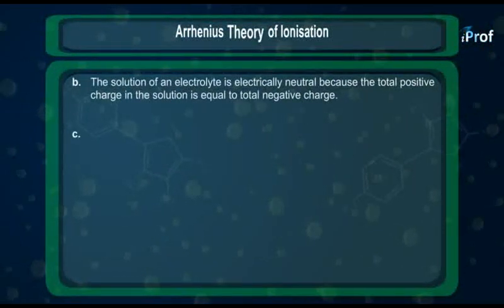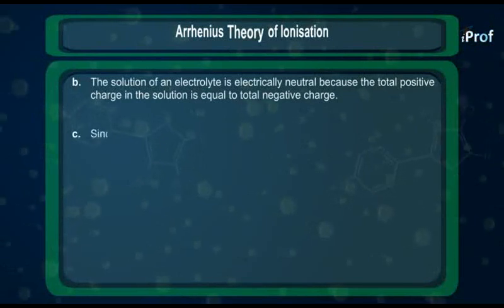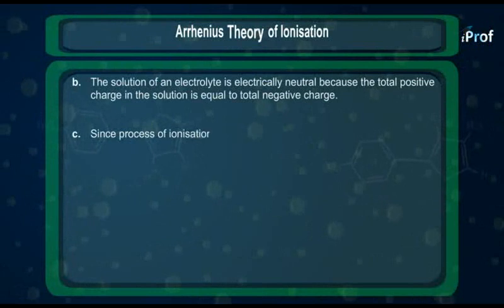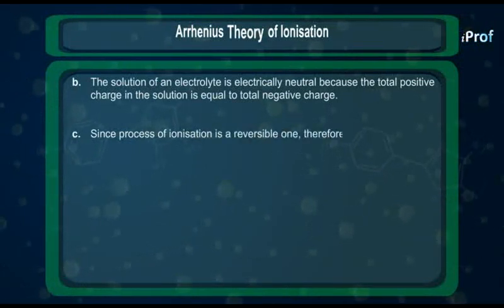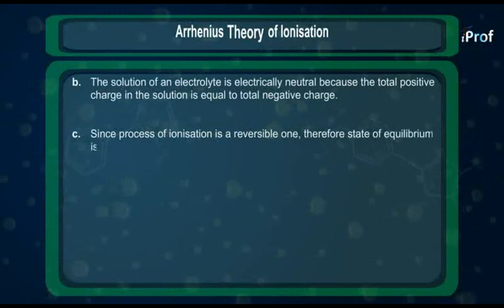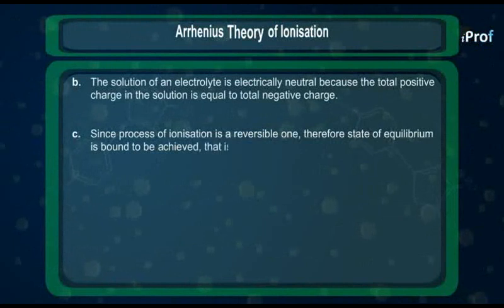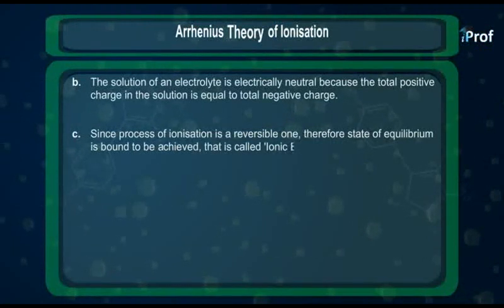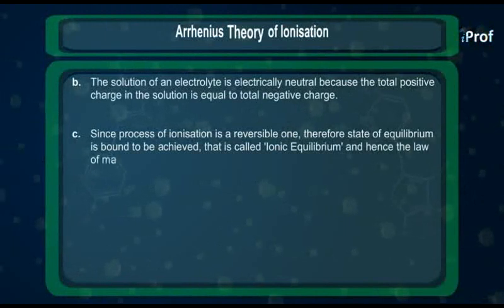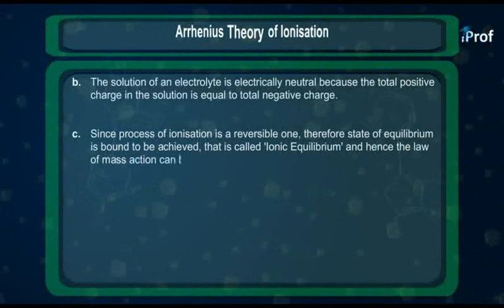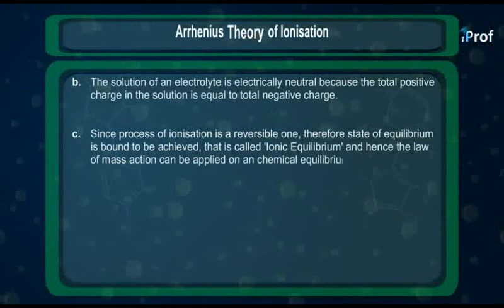Third point: since the process of ionization is a reversible one, therefore a state of equilibrium is bound to be achieved, and that is called ionic equilibrium. Hence, the law of mass action can be applied over it, as we had earlier applied to chemical equilibrium.